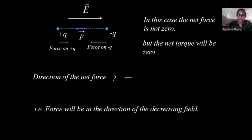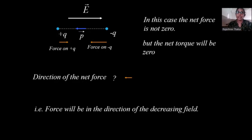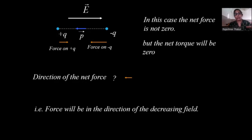This explains the experiment where a charged balloon is brought near paper bits. The charged balloon produces a non-uniform field, which polarizes the paper bits. Because of this non-uniform field, the paper bits experience a net force and move toward the balloon. This is why any neutral body gets attracted toward a charged body placed nearby.